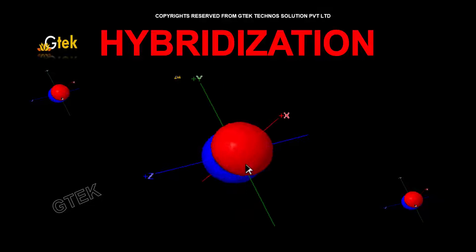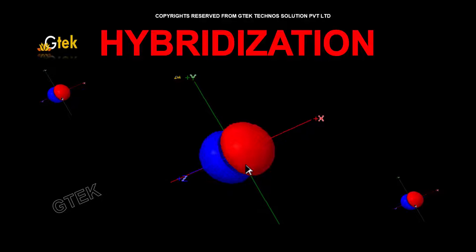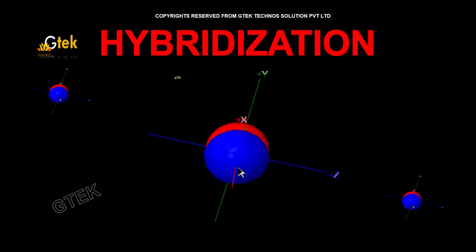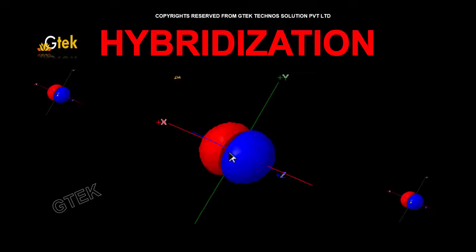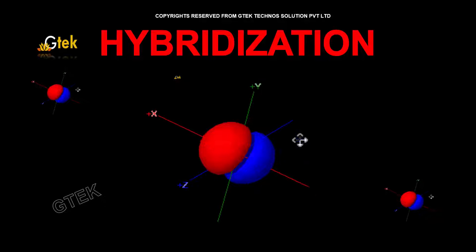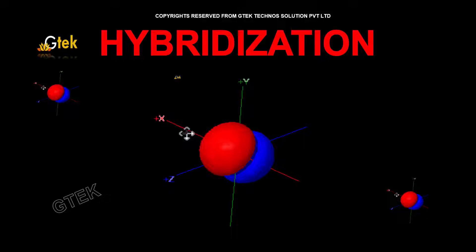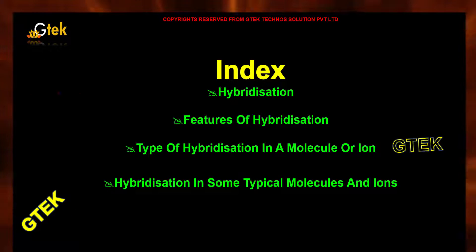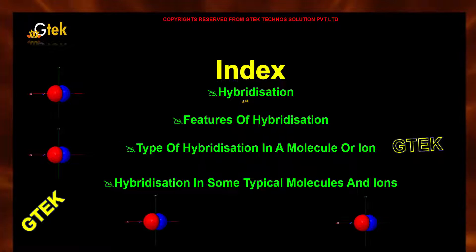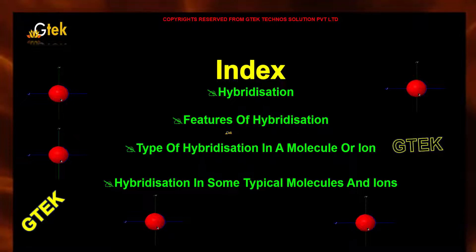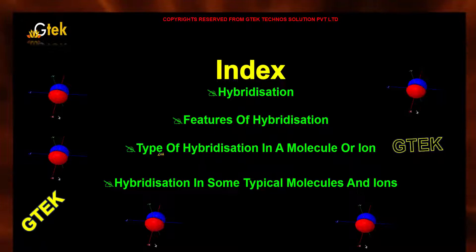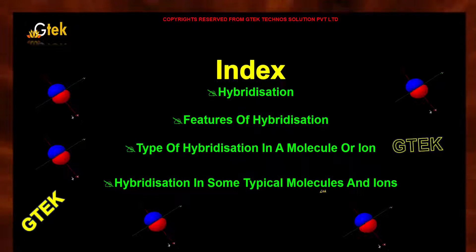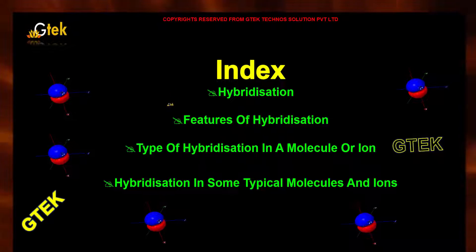Here is the hybridization technique, which enables you to provide different properties for an atom. We are going to talk about the hybridization: the features of hybridization, the types of hybridization in a molecule, hybridization in some typical molecules and ions. These are the areas we are looking into.